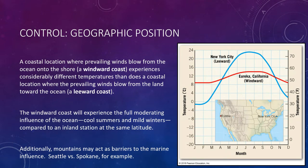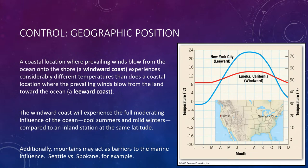Geographic position also matters. The geographic setting can greatly influence the temperatures experienced at a specific location. A coastal location where prevailing winds blow from the ocean onto shore — a windward coast — experiences considerably different temperatures than a coastal location where the prevailing winds blow from land toward the ocean — a leeward coast. The windward coast experiences the full moderating influence of the ocean: cool summers and mild winters compared to an inland station at the same latitude. A leeward coast will have a more continental temperature pattern because the winds do not carry the ocean's influence on shore. Eureka, California and New York City illustrate this: they are at the same rough latitude and both near oceans, but wind direction significantly affects their temperatures.